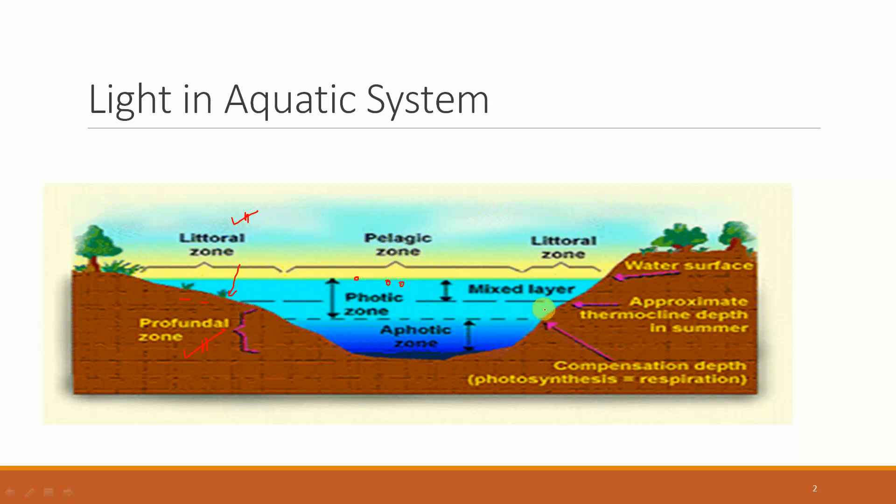There is also a mixed layer in between. This is divided into photic zone and aphotic zone. Photic zone is that zone where light is reaching. Profundal zone or the aphotic zone is where no light is reaching.